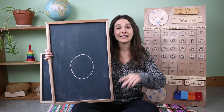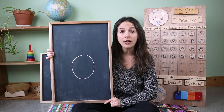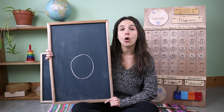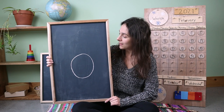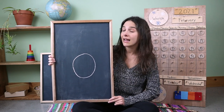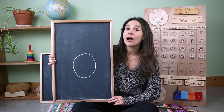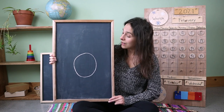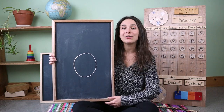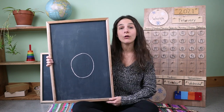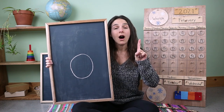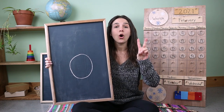And the second sound that this letter makes is a long sound. The long sound sounds like this — oh. And do you know what letter this is? It's not a circle — a circle is a shape. Do you know what letter this is? Oh, you're right, friends. This is a lowercase o. And a lowercase o makes two sounds: ah and oh.